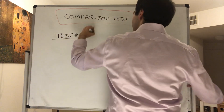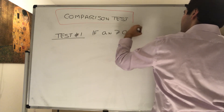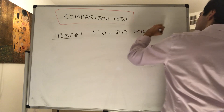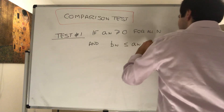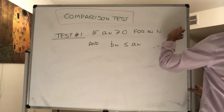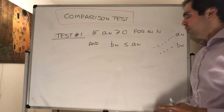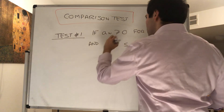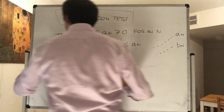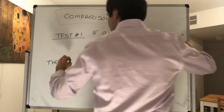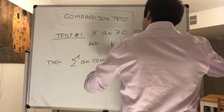Suppose you have a sequence of positive terms, so a_n is bigger than zero for all n, and b_n is less than or equal to a_n. Here is your sequence a_n and here's your sequence b_n. We would like a slightly stronger condition, so let's put: absolute value of b_n is less than or equal to a_n. Then if the bigger series converges, the smaller series must converge as well.